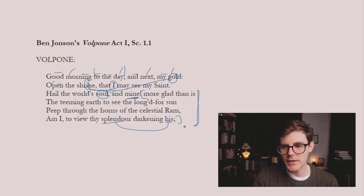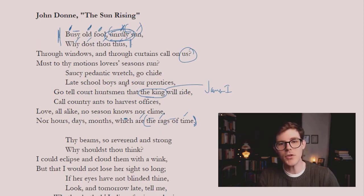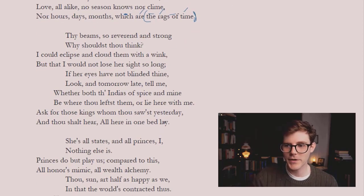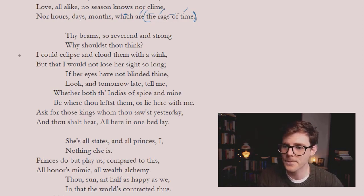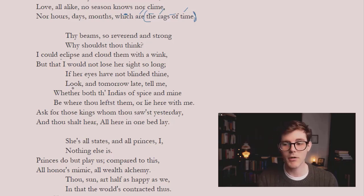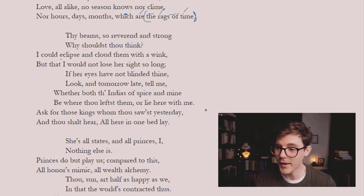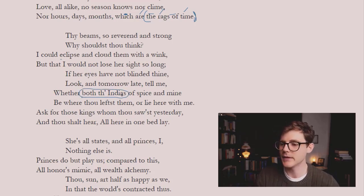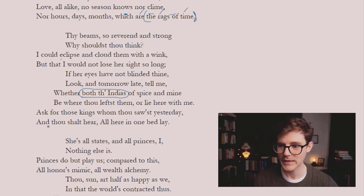Now let's return to Donne's 'The Sun Rising.' Here we have subject then verb, which usually follows in a natural conversational order. The dramatic voice continues: 'Thy beams so reverent and strong, why shouldst thou think? I could eclipse and cloud them with a wink, but that I would not lose her sight so long.' The sun could be eclipsed with only a wink. 'If her eyes have not blinded thine, look, and tomorrow late tell me whether both the Indias of spice and mine be where thou left them, or lie here with me' — talking about the Americas and the actual India of the East.